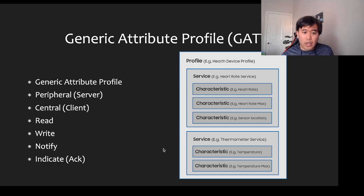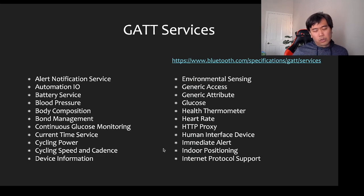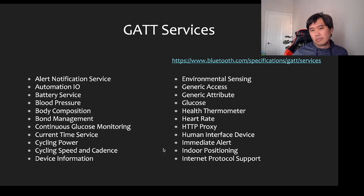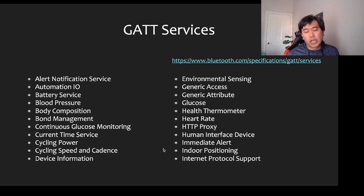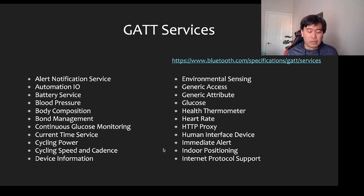You can either read, write, notify, subscribe, or indicate and acknowledge. There are different types of predefined GATT services — common ones include the battery service. These are patterns that device manufacturers implement so clients have a common communication standard, but many devices also implement custom services depending on the manufacturer.